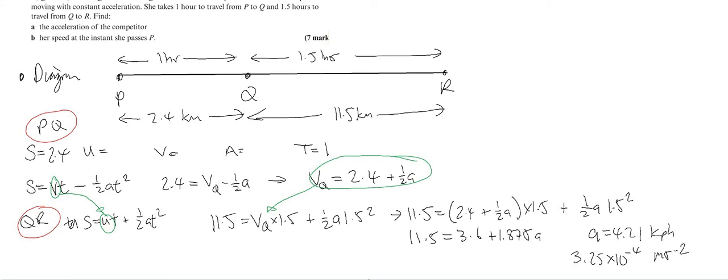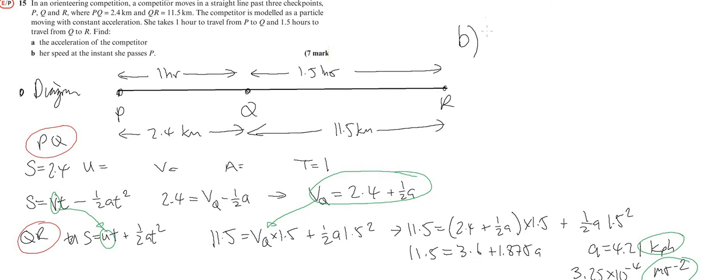That's a. Now remember this point about kilometers per hour to meters per second is important because for part B we're trying to work out speed, and the speed is going to be in meters per second as well. For P to Q, distance is 2.4, don't know what u is, that's the thing I'm trying to find out. a I now know is 4.21 in kilometers per hour, and the time is one. I'm going to use s equals ut plus half a t squared.